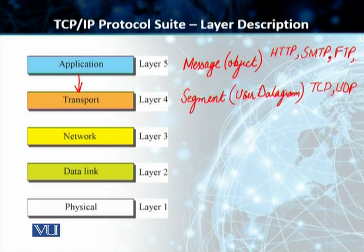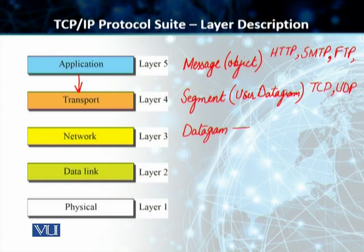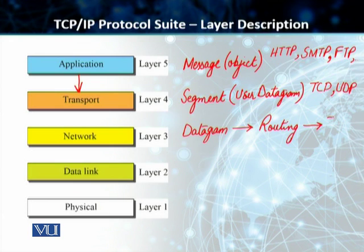Students, the next layer is the network layer. The network layer is basically responsible for creating a datagram — the object at this layer is a datagram. We use layer three to perform routing all the way from the source to the destination. An example protocol is the internet protocol, or the IP protocol, and we'll discuss this layer further in the course of computer networks.